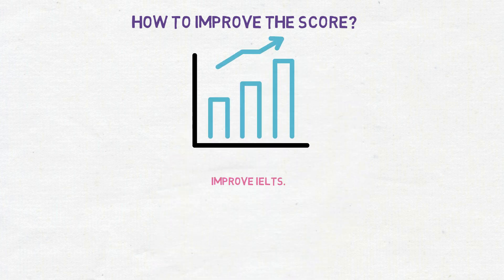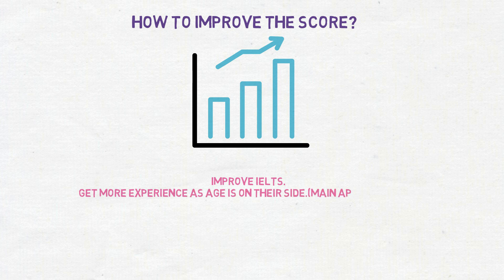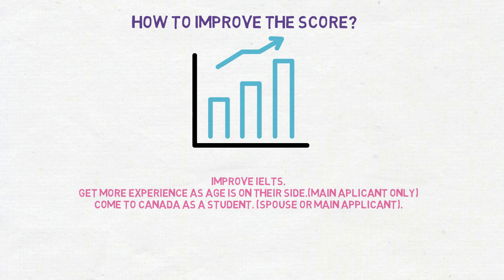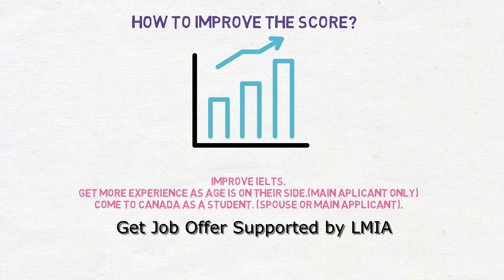First, improve their IELTS score — if both primary and secondary applicants can score more on IELTS, that will considerably boost their CRS score. Second, get more work experience, as age is on their side — though this option only works for the primary applicant, since foreign work experience does not count for the secondary applicant. Third, come to Canada as a student, which adds education points and eventually Canadian work experience. Finally, if one of them — preferably the primary applicant — can get a job offer from Canada, that will also help boost their score.